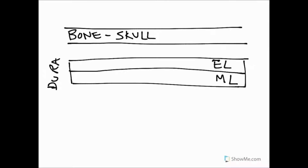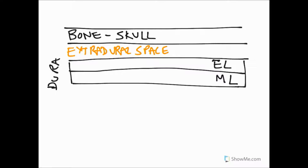We're going to draw on a potential space that can exist between the bone — the skull — and the endosteal layer, the outer layer. This is going to be called the extradural space. It's important to remember that this is just a potential space; usually the endosteal layer of the dura is adhered tightly to the skull, and this space only exists when it's forced apart by a bleeding blood vessel.